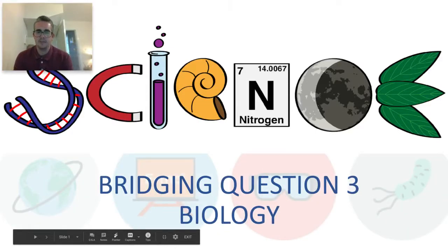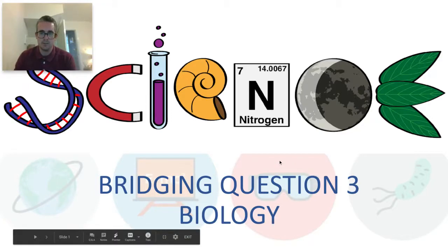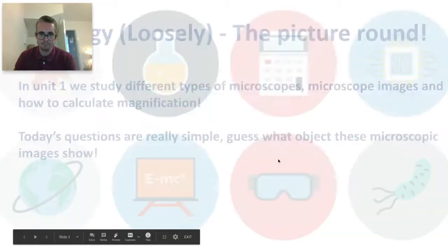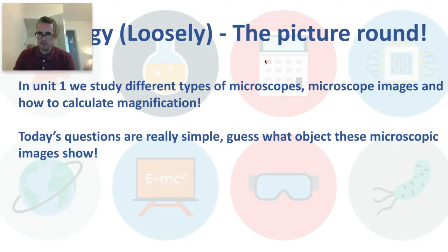Hi everyone, I'm Dan, I'm another member of the Applied Science team and I'm just going to introduce you to the final set of questions relating to the Applied Science quiz. This time relates to biology. So as you can see, we've got a picture round and it relates to microscopes, which is one of the topics we study in unit one of first year Applied Science.